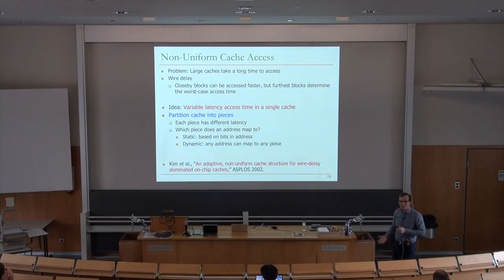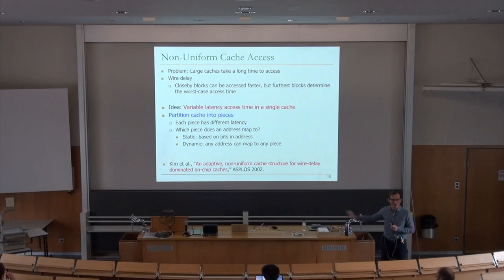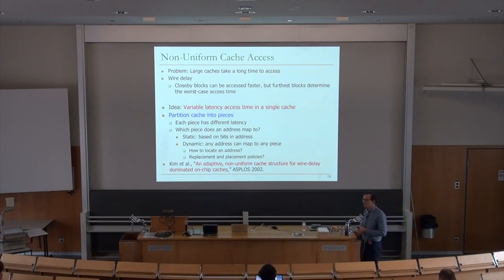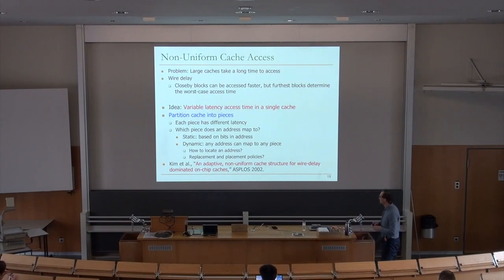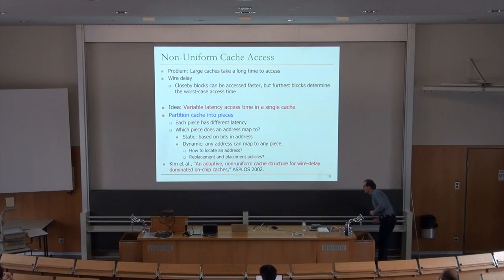With dynamic addressing you need a translation table from address to cache piece location, which has much more overhead. But now you have flexibility: you can use counters to detect a heavily accessed block and migrate it from the slow portion to the fast portion of the cache. That migration itself has overhead. This opens up a huge optimization space: how to locate an address, how to maintain the mapping table, and replacement/placement policies.